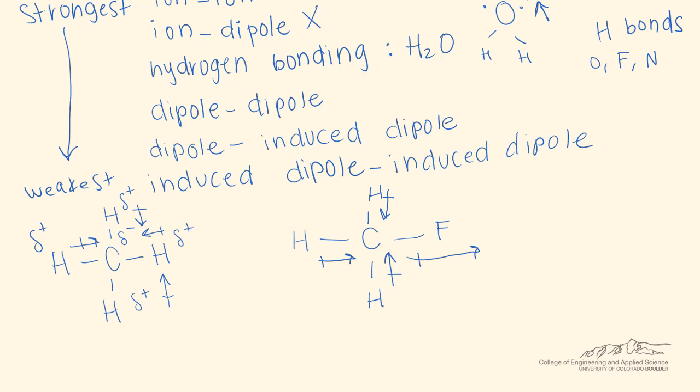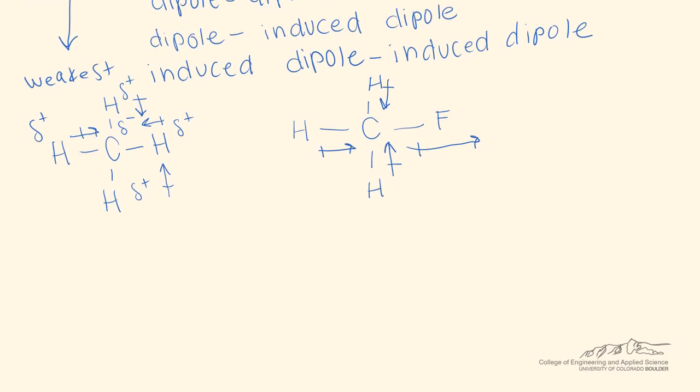Fluoromethane has the next highest bond strength. Because we know that the weaker bond strength leads to the higher vapor pressure, we know that the highest vapor pressure is methane. The next highest vapor pressure is fluoromethane due to its dipole-dipole interactions. And finally, our lowest vapor pressure is H2O because of the hydrogen bonding.